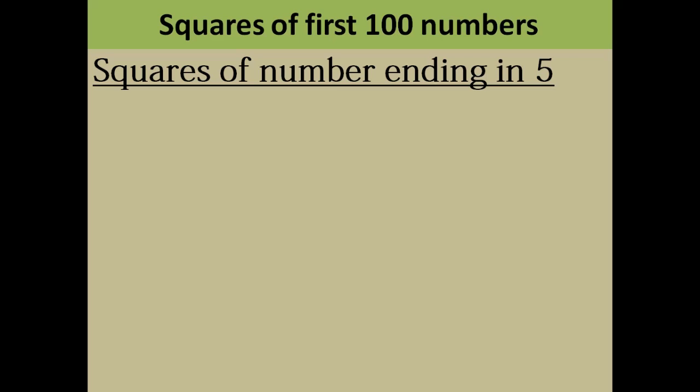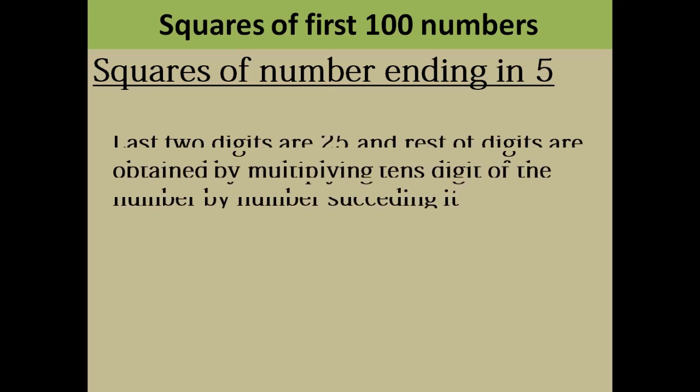Now let's find the squares of the numbers ending in 5. All those numbers that end in 5, for example 15, 25, 35, 45, 55. What you have to do is the last two digits of those numbers will always be 25.